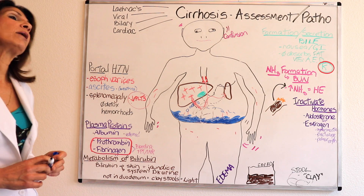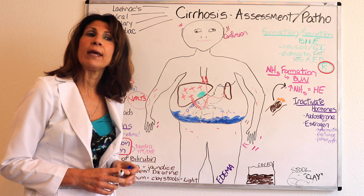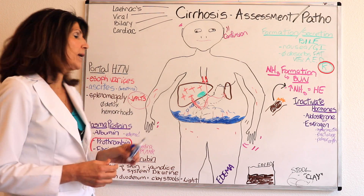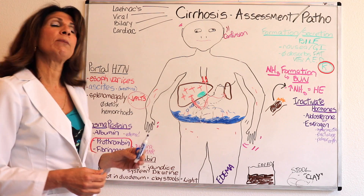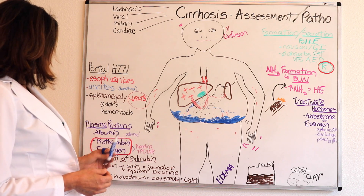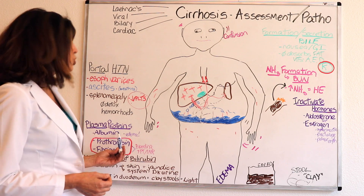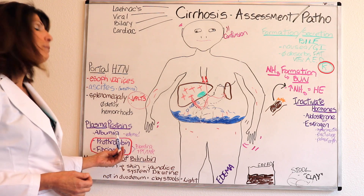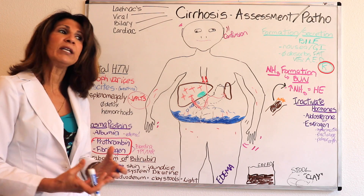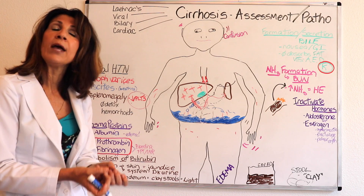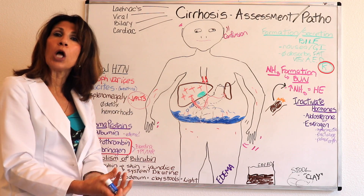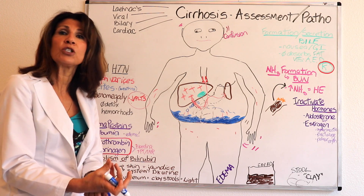Let's talk about another function of the liver. The liver is responsible for manufacturing plasma proteins — like albumin, prothrombin, and fibrinogen. When the liver fails, it is not able to manufacture albumin, that plasma protein with the pulling power for water, which helps maintain intravascular volume and keep pressure in the vascular space.